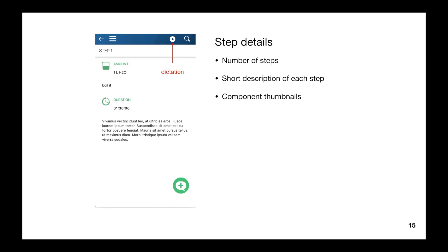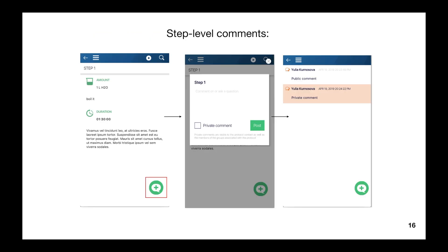If you want to read full step information, just select the exact step. The structure of the step detail screen is similar to our website — it contains ordered components. The step detail screen also contains a dictation mode, which you can run by tapping a small button at the top of the screen. If you want, you can add a step-level comment by tapping the plus button. In the comment screen, you can set privacy: private comments are visible only to the protocol owner and you, while public comments are visible to all users.